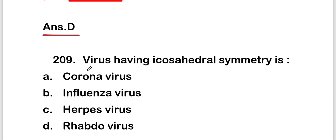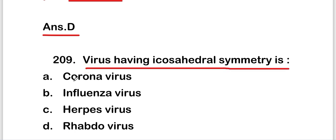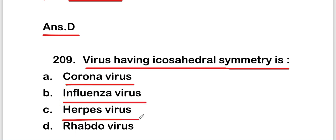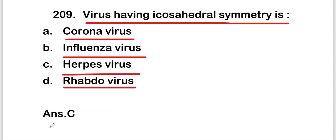The next question is: which virus has icosahedral symmetry? Options are coronavirus, influenza virus, herpes virus, or rhabdovirus. The right answer is option C, that is herpes virus. The virus having icosahedral symmetry is herpes virus.